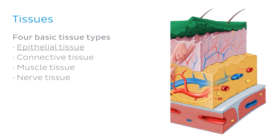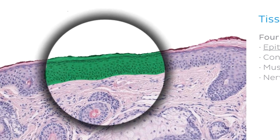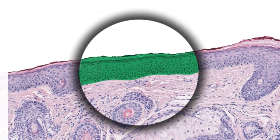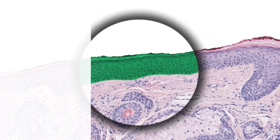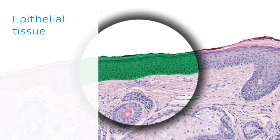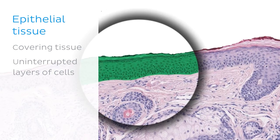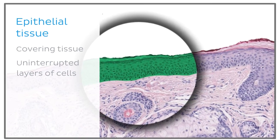Now that we've covered the four basic tissue types of the human body, let's focus on the one we're interested in, which is epithelial tissue. Epithelial tissue is known as a covering tissue made up of uninterrupted layers of cells, because it covers all external body surfaces and lines internal body cavities.